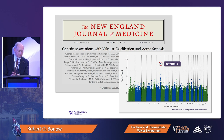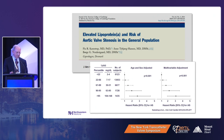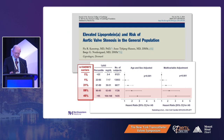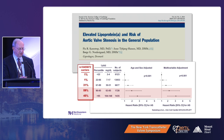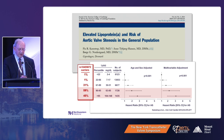Lp(a) has become a target and has been verified in large studies from Kaiser and from Denmark, where large registry populations were followed for development of aortic valve calcification over time. When Lp(a) levels are in the 90th percentile or greater, there's a signal of an increased hazard ratio for development of aortic stenosis. In those individuals with genetic data, over 50% who ultimately develop aortic stenosis with high Lp(a) are carrying that gene as well.